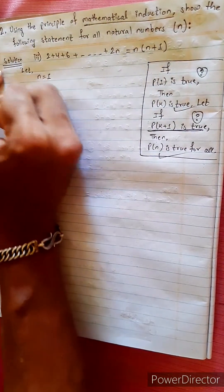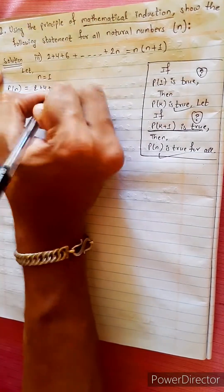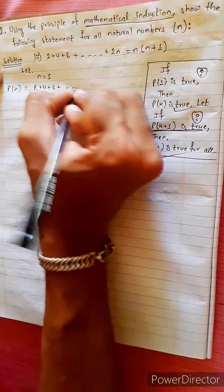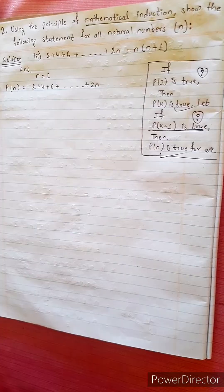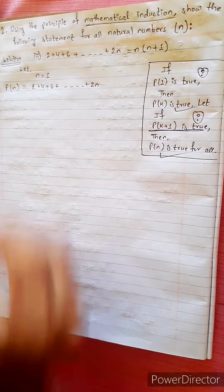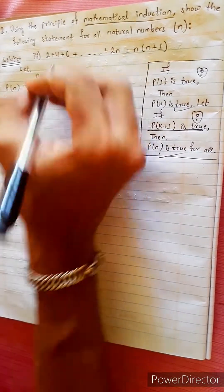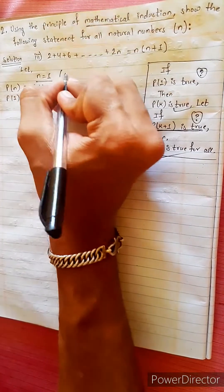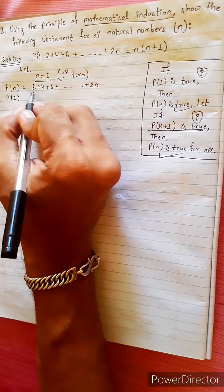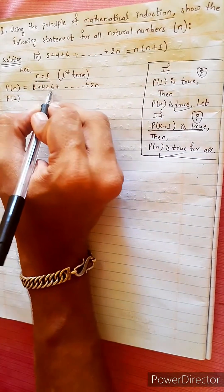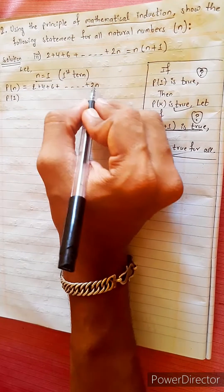We can see Pn is true: 2 plus 4 plus 6 plus ... plus 2n. This is P1 when n equals 1. For n equals 1, 2, 3, 4, 5, 6 — the first term is 2.